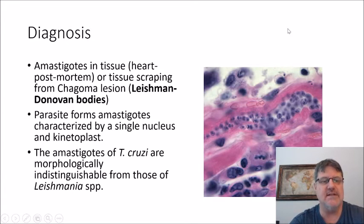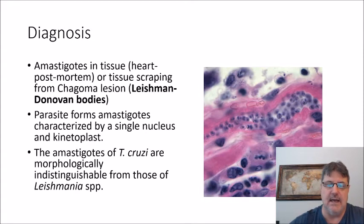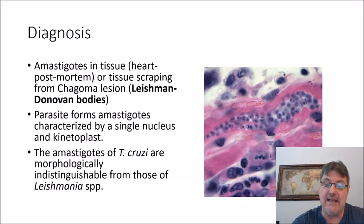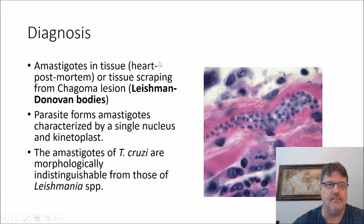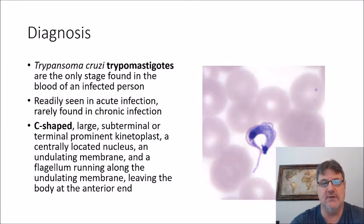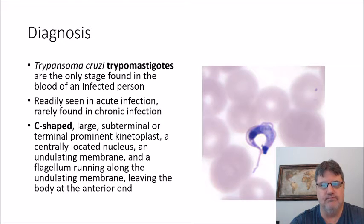For diagnosis, you can see the amastigotes — that's one of the stages in the tissue, seen in the heart at postmortem or in tissue scrapings from the chagoma lesion. What you see here are the Leishman-Donovan bodies. The parasite forms amastigotes characterized by a single nucleus and kinetoplast. The amastigotes of T. cruzi are morphologically indistinguishable from those of Leishmania species. More commonly, you can diagnose T. cruzi through its trypomastigotes — the stage found in the blood. It's very easy to see in acute infection; in chronic infection, not so much.